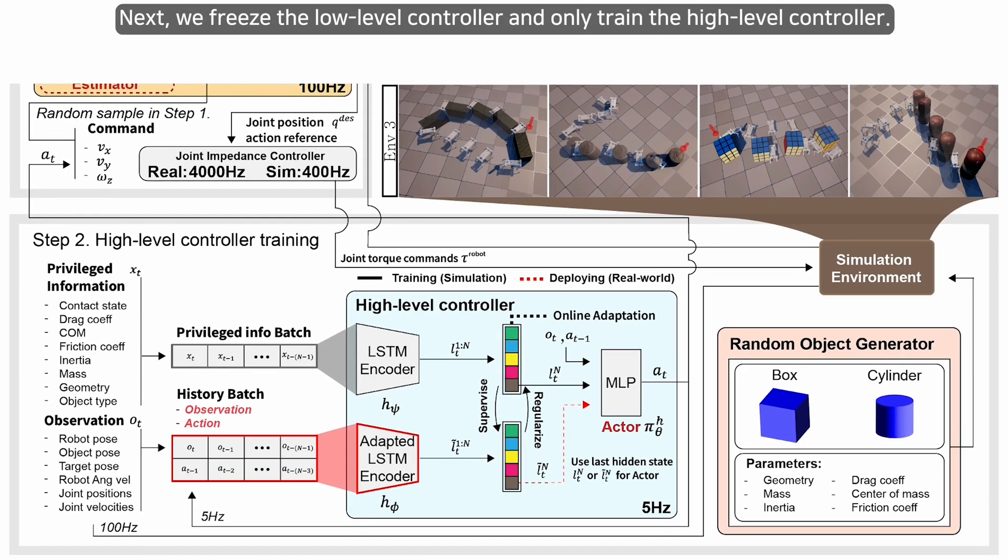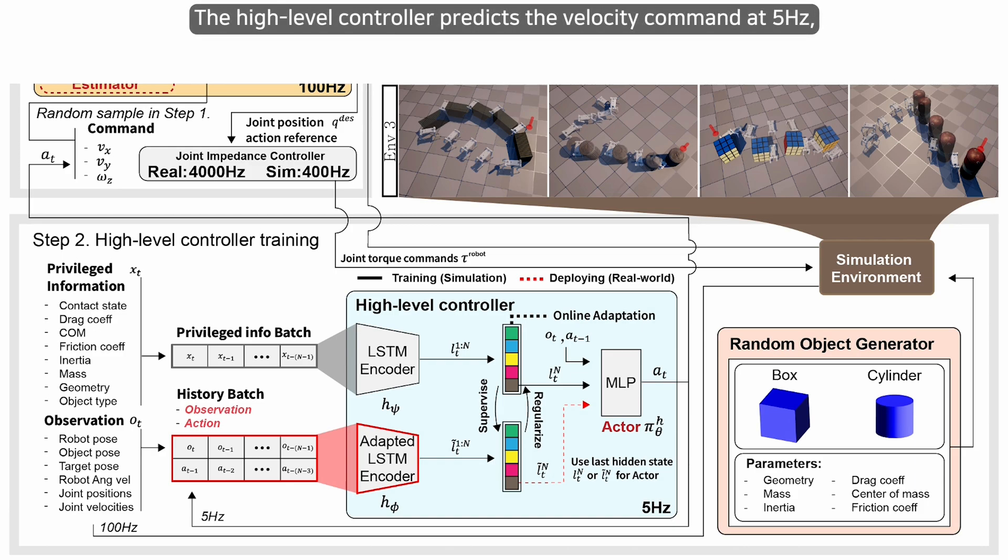Next, we freeze the low-level controller and only train the high-level controller. The high-level controller predicts the velocity command at 5 Hz, while the low-level controller tracks the provided command at 100 Hz.